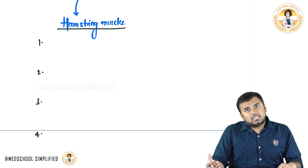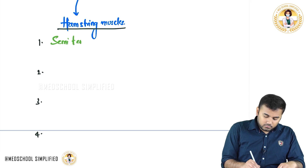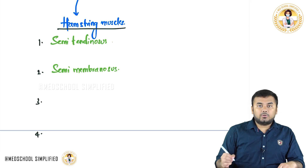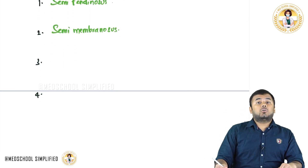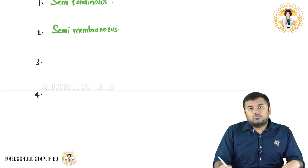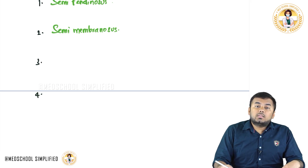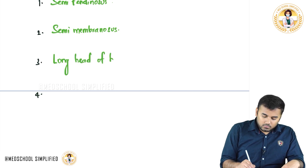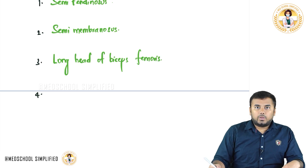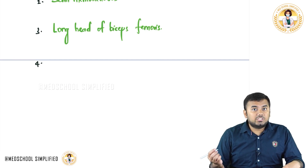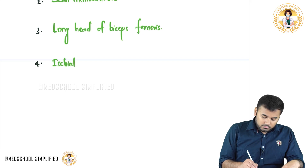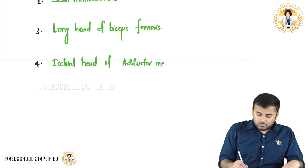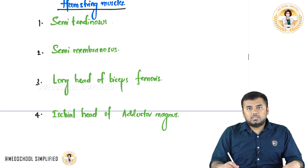Half is called 'semi.' So we have semitendinosus and semimembranosus. Apart from that, we have biceps femoris — just as we have biceps brachii in the upper limb, in the lower limb we have biceps femoris. This biceps femoris has two important heads: one is called the long head and the other is called the short head. The last important muscle is the ischial head of adductor magnus.